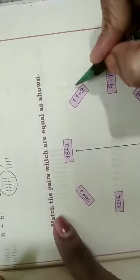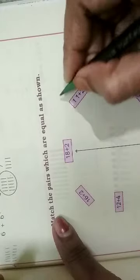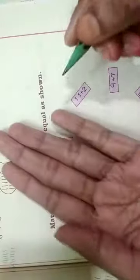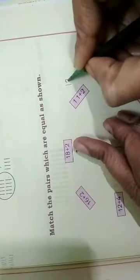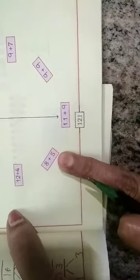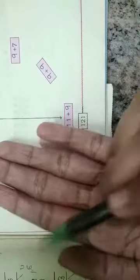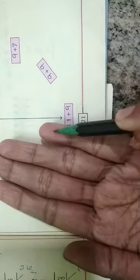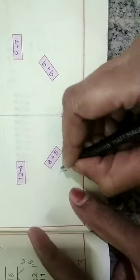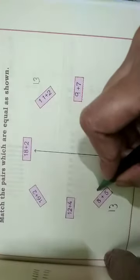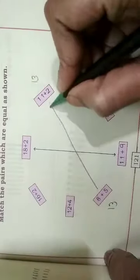Next, 11 plus 2. Which number comes after 11? That is 12, 13. So 11 plus 2 is equal to 13. Next, 8 plus 5 — which number comes after 8? That is 9, 10, 11, 12, 13. These two sums have equal answers, so we match these two sums.